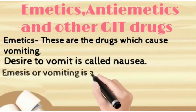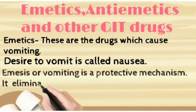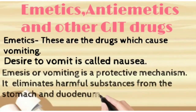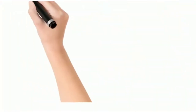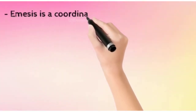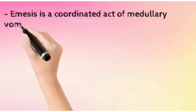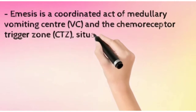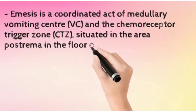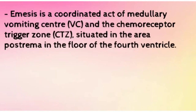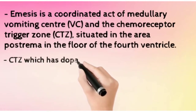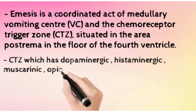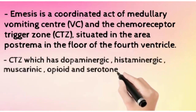Emesis or vomiting is basically a protective mechanism — it is going to eliminate all the harmful substances from the stomach and duodenum. Emesis is a coordinated action of the medullary vomiting center and the chemoreceptor trigger zone (CTZ), which is situated in the postrema in the fourth ventricle. CTZ basically has dopaminergic, histaminergic, muscarinic, and opioid receptors — various receptors are present in CTZ which provide inputs to the vomiting center.